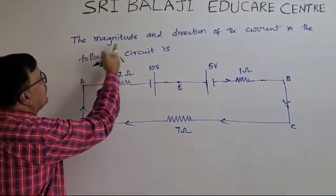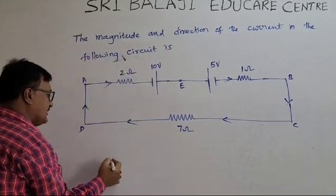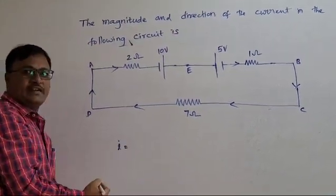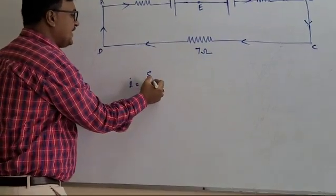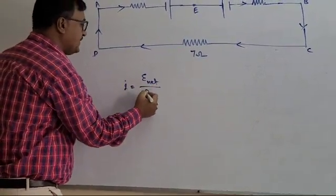So, the examiner is asking to find the magnitude of current. What is the net current in the circuit? Net current is equal to net EMF divided by net resistance.